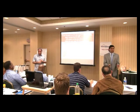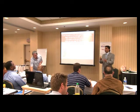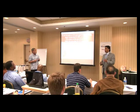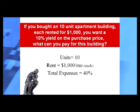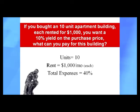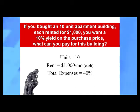Let's do one more example with easy, straight numbers. You bought a 10-unit apartment building — numbers all work at 1% a month, 12% annually, $100,000 — so you can get the concept and apply it with different numbers. Each unit rents for $1,000 a month. Your total expenses — taxes, insurance, everything, including vacancy — come to 40%. If you want a 10% yield on your money, what is the most you can pay for this building?